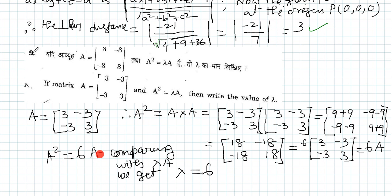So we found that A square is equal to 6 times A matrix. Now comparing this with A square is equal to lambda A, we find that lambda is equal to 6. So the value of lambda is 6, so this is the answer for the given problem.